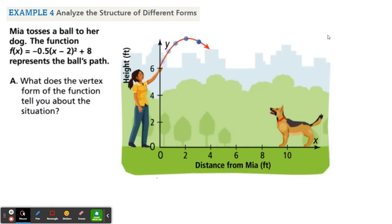Okay, and last but not least here, example 4, I think it's two parts. It says, Mia tossed the ball to her dog. Here's the function that represents the ball's path. Again, any time you toss something up in the air, it has to come back down because of gravity, so you have a parabolic motion. What does the vertex form of the function tell you about the situation? So when it's in vertex form, you can identify the vertex. So if I write this down, f of x equals negative 0.5 times x minus 2 squared plus 8. This is a times x minus h squared plus k.